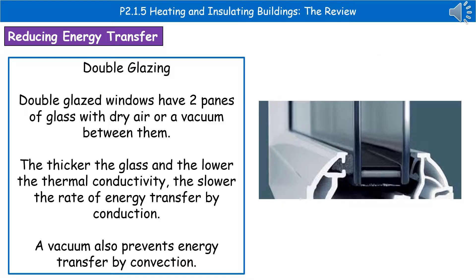The next method is double glazing. Double glazing works by having two panes of glass, as you can see on the right, with dry air or a vacuum between them. Using thicker glass or a material with lower thermal conductivity results in a slower rate of energy transfer by conduction. If a vacuum is used between the panes, it also prevents energy transfer by convection.